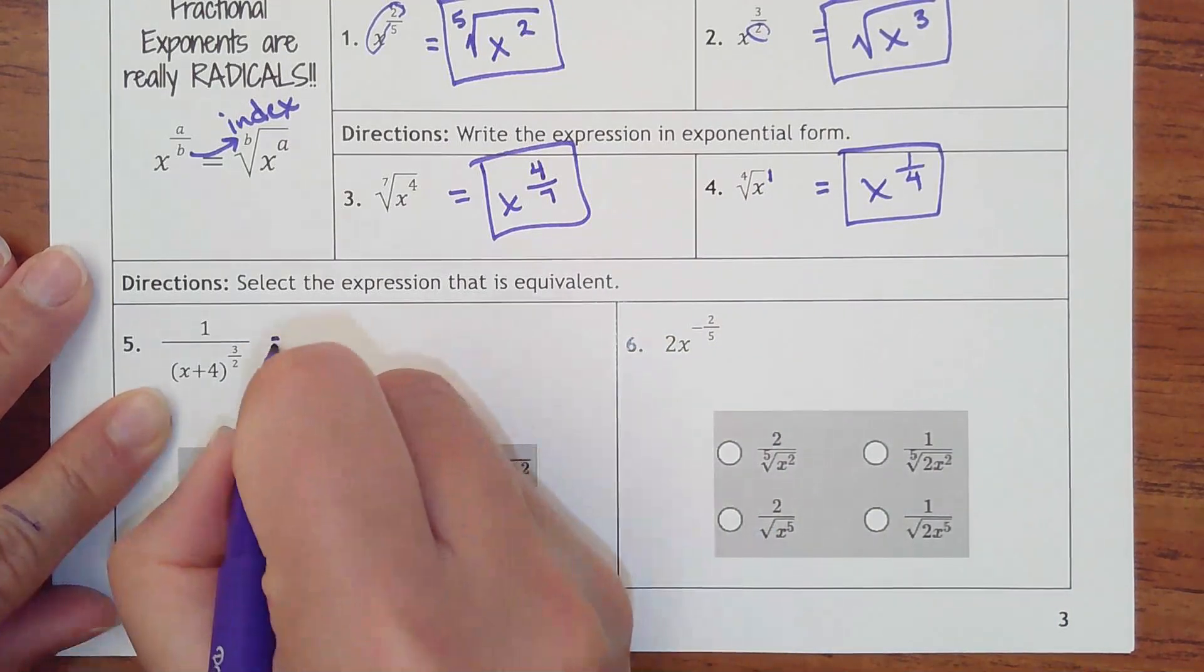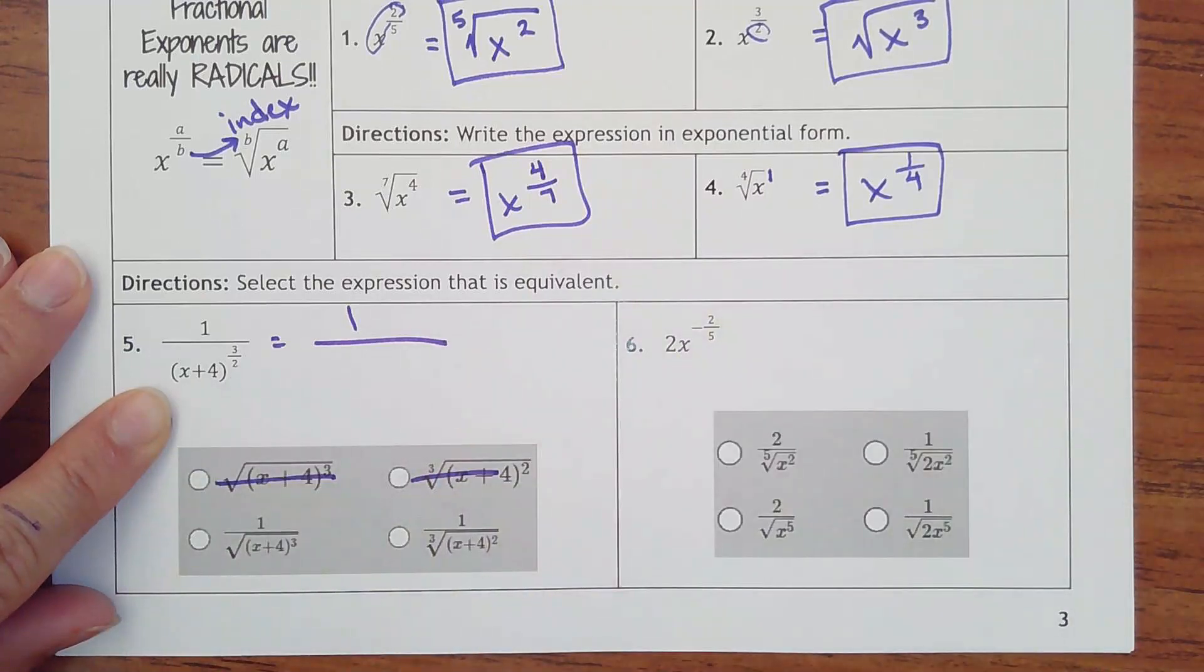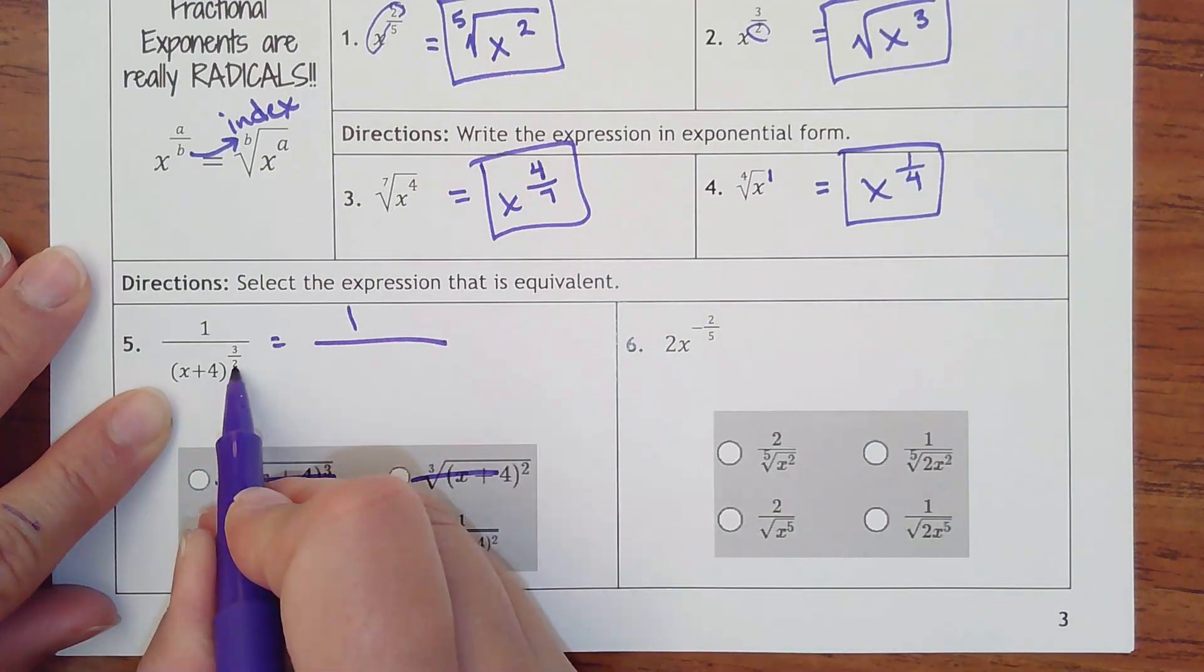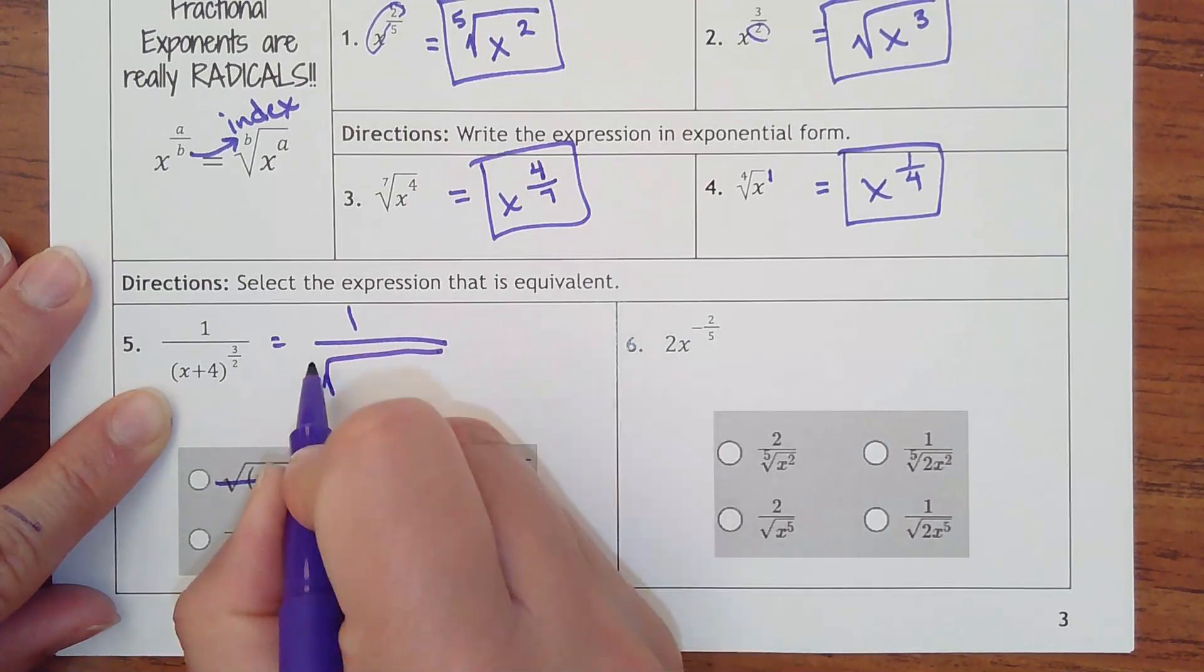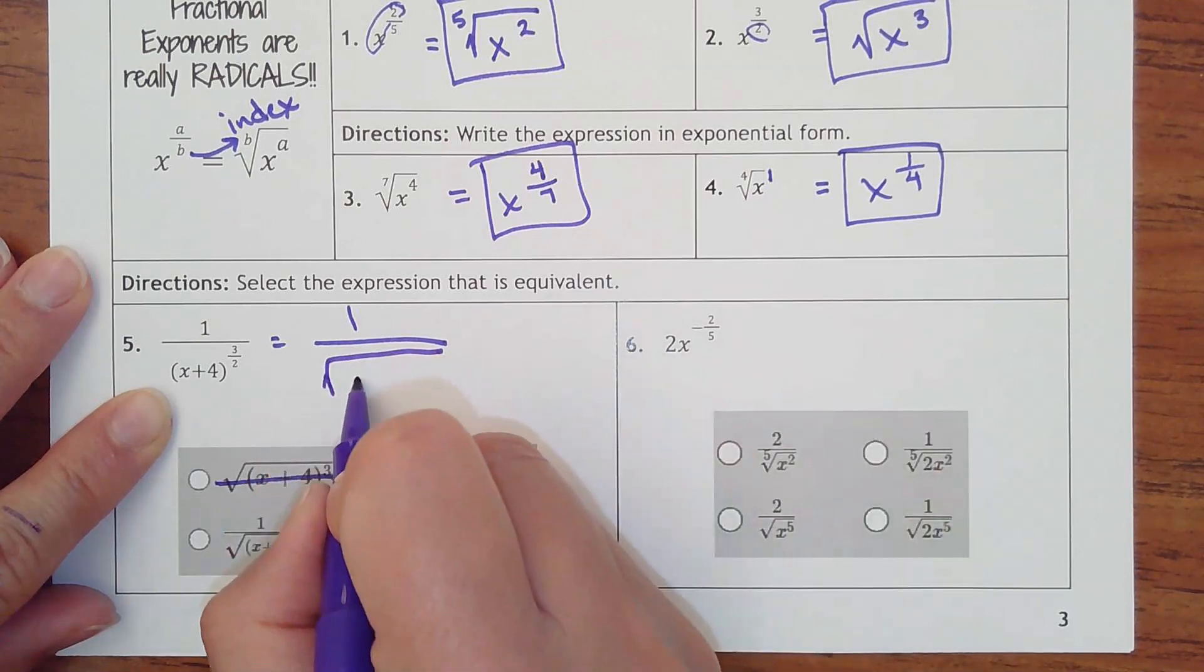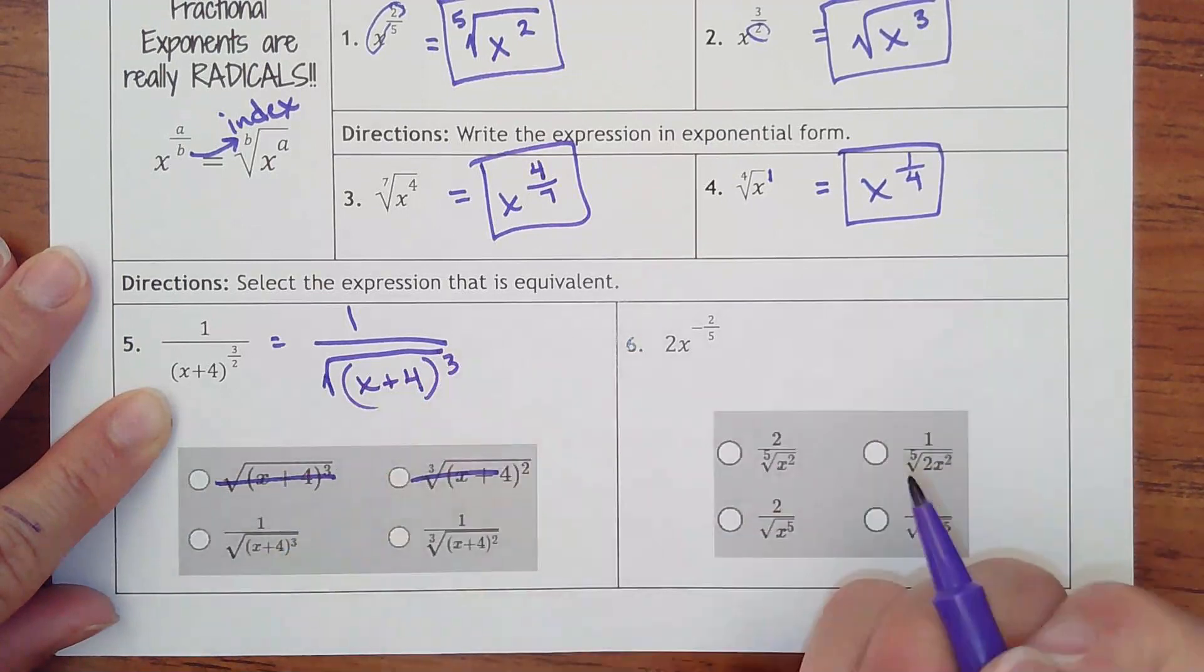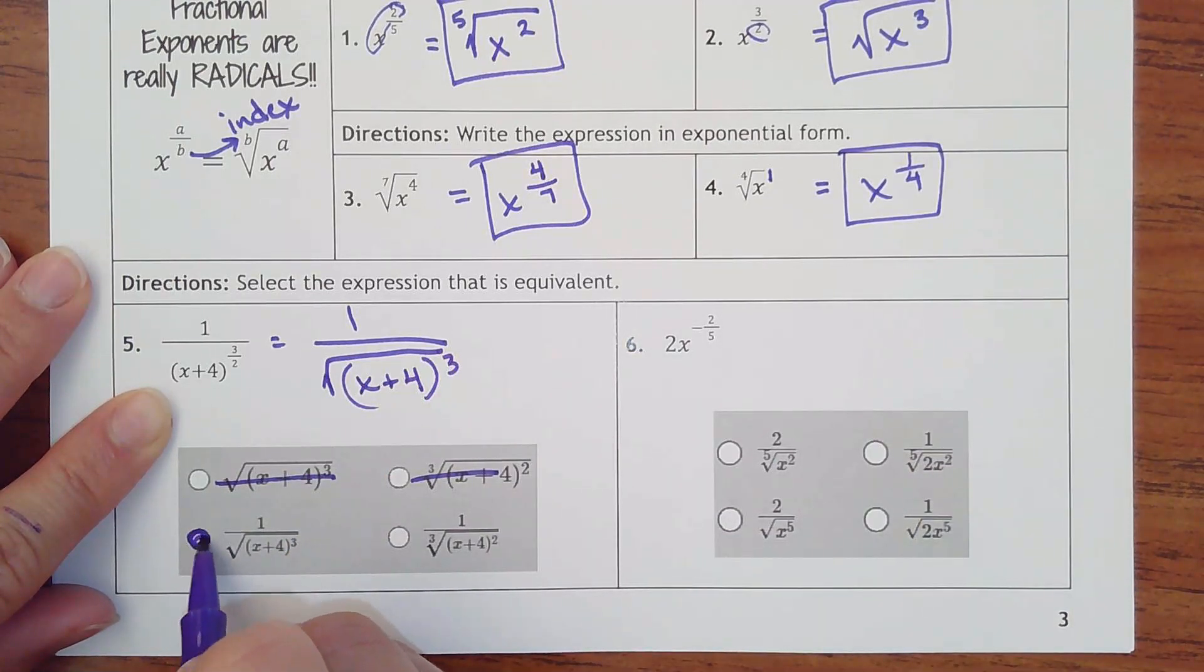And so this two means I have a square root, and a square root does not need the two here. It's automatically known that if you have a square root symbol, its index is two, x plus four. Keep in parentheses. It's raised to the third power. So that would be this one because it's a square root of something cubed, not a cube root of something squared.